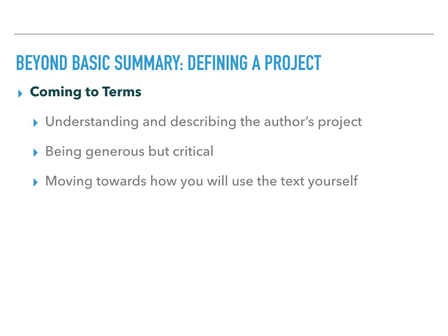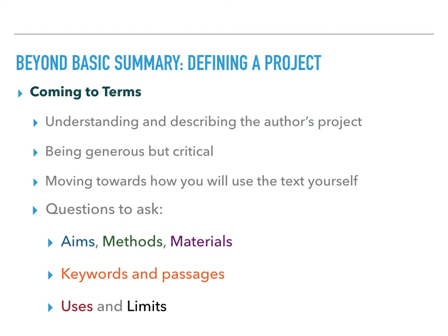So let's review, because these are the things that really need to stick in your head. Coming to terms is a way of understanding and describing an author's project that is both generous and critical, and it becomes the basis for your own use of the text. You need to consider the author's aims, methods, and materials, all while representing them accurately through at least a few of their own key words and passages. Then you need to think about how their ideas are useful or limited or both. When you come to class, expect me to ask about these specific things with any of the readings assigned — this is the framework I will use to structure our class conversation. When you're annotating the text, you can be looking for these specific things.